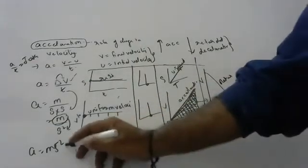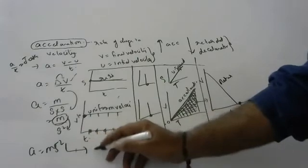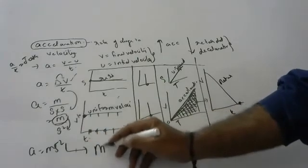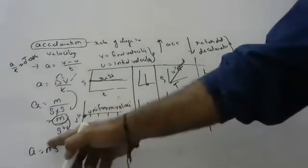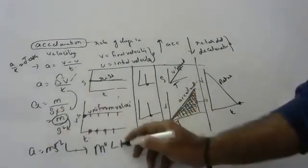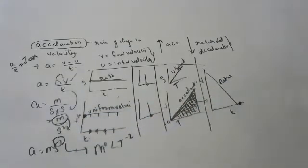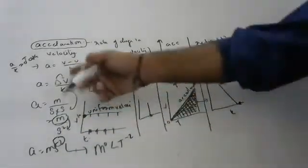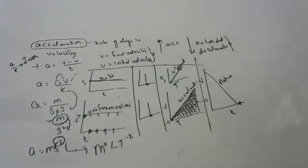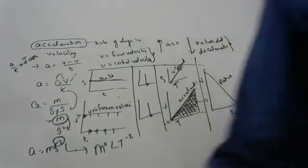In higher classes, rate of change of acceleration is also called jerk, but that is not important now. Increase in speed is called acceleration; decrease in speed is called retardation. The SI unit of acceleration: length divided by time squared gives the unit — meters per second squared.